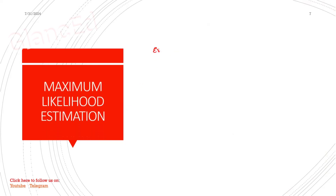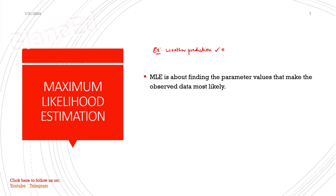Before discussing the points of Maximum Likelihood Estimation, let's understand it with a weather prediction example. Assume you have been living in a specific area for about 10 years. You know that at a particular month of the year it will rain for sure, so you predict that next year it will also rain at that same month. You are considering previous data to predict the weather.